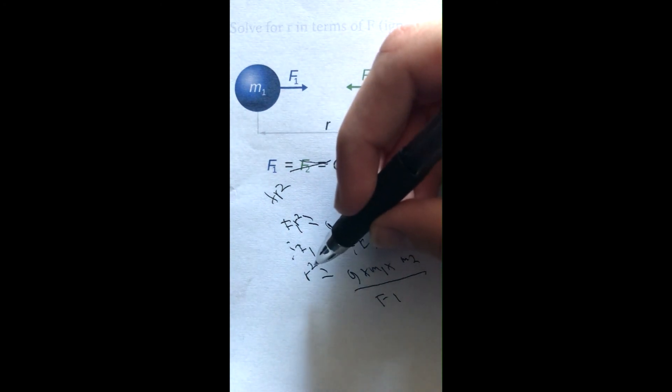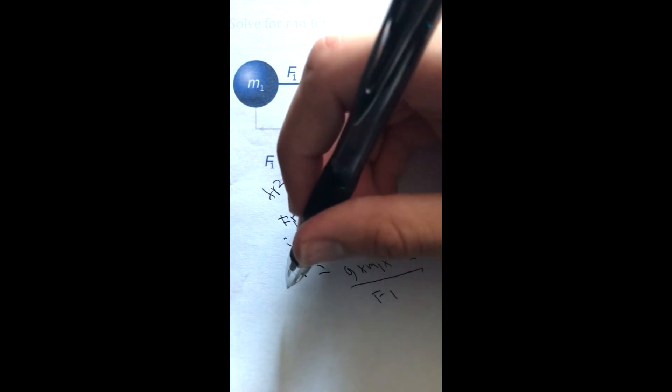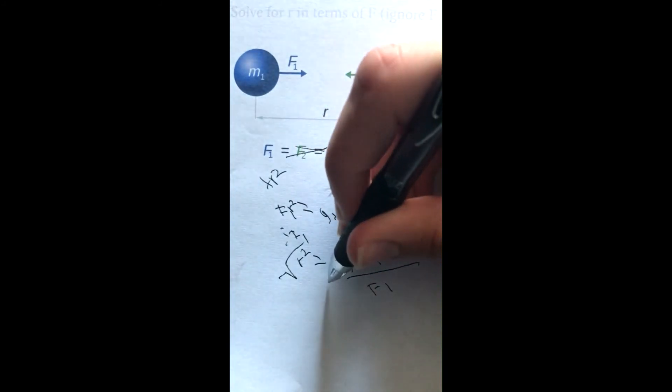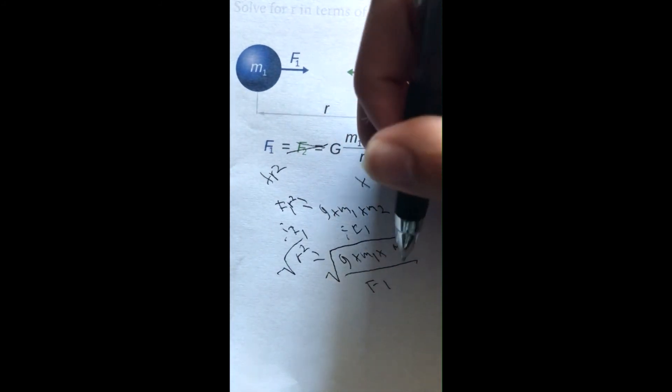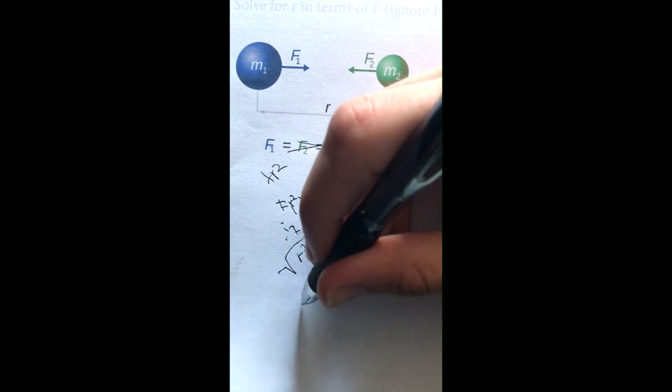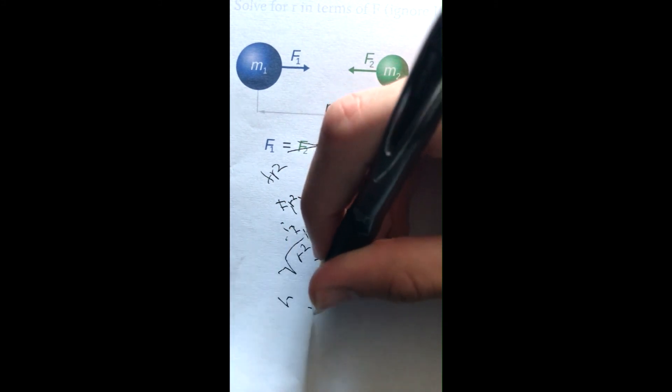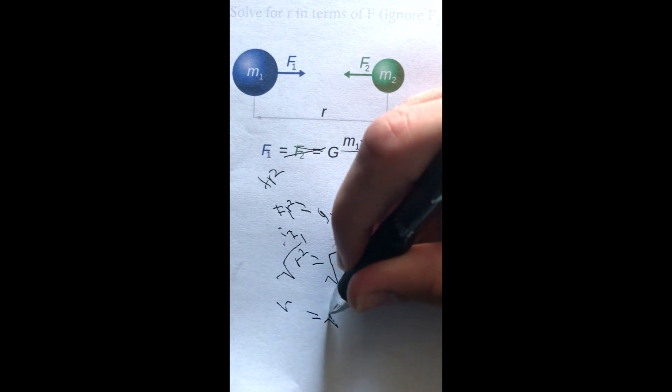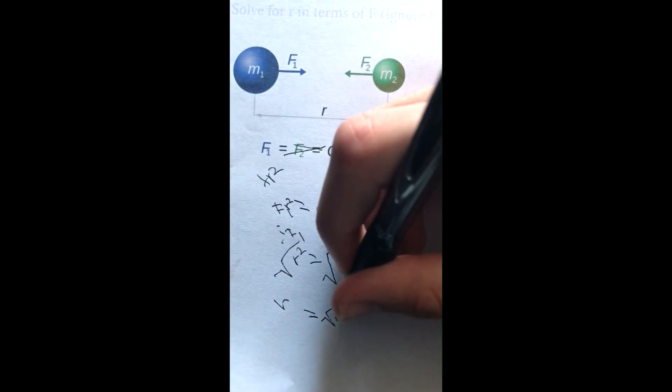And since it's squared, you need to square root both sides, and r equals the square root of G times m₁ times m₂ over F₁.